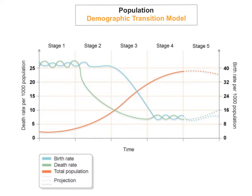We're going to look at the demographic transition model and this is what the demographic transition model looks like. As you can see, you can see stage 1, stage 2, 3, 4 and 5. So it's got 5 stages to the demographic transition model.